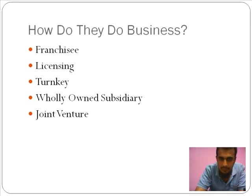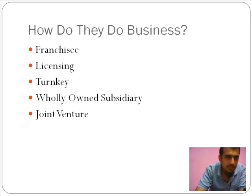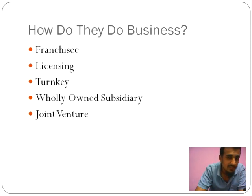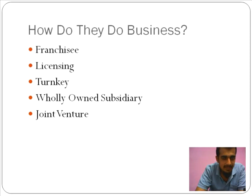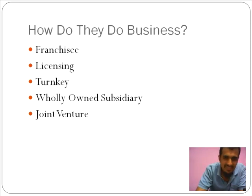Each of these different ways in which a multinational company does business is dependent on the sector of industry they are a part of: franchisee for fast food and food and beverage, licensing for automobile manufacturing, turnkey for construction, wholly owned subsidiary for telecom and service sector, and joint venture also in the case of automobiles. Licensing is usually manufacturing in general. I hope you found this video helpful — if you have any queries, do leave them in the comments section. Thank you for your time. Subscribe to my videos. Have a nice day.